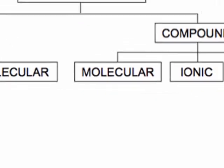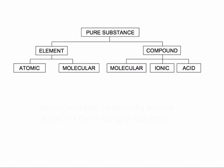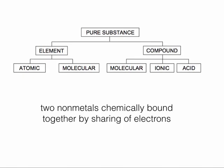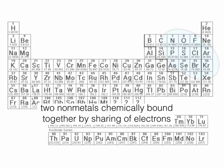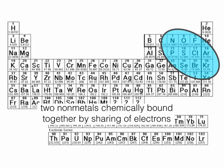Molecular compounds contain non-metals only. When you look at the periodic table and you know where the non-metals are, and you see two different non-metals bound together, you know it is a molecular compound. The distinguishing feature of molecular compounds is that they don't transfer electrons, but they share electrons in the chemical bond between them.